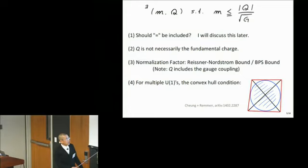This is for single U1, but in general there can be multiple U1. One way to require is to insist on this Reisner-Nordström bound. Christian and Grant Raymond formulated this. If there are similar U1s, then you plot the charge to mass ratio. The unit disc should be included in it. So that's a convex hull condition.